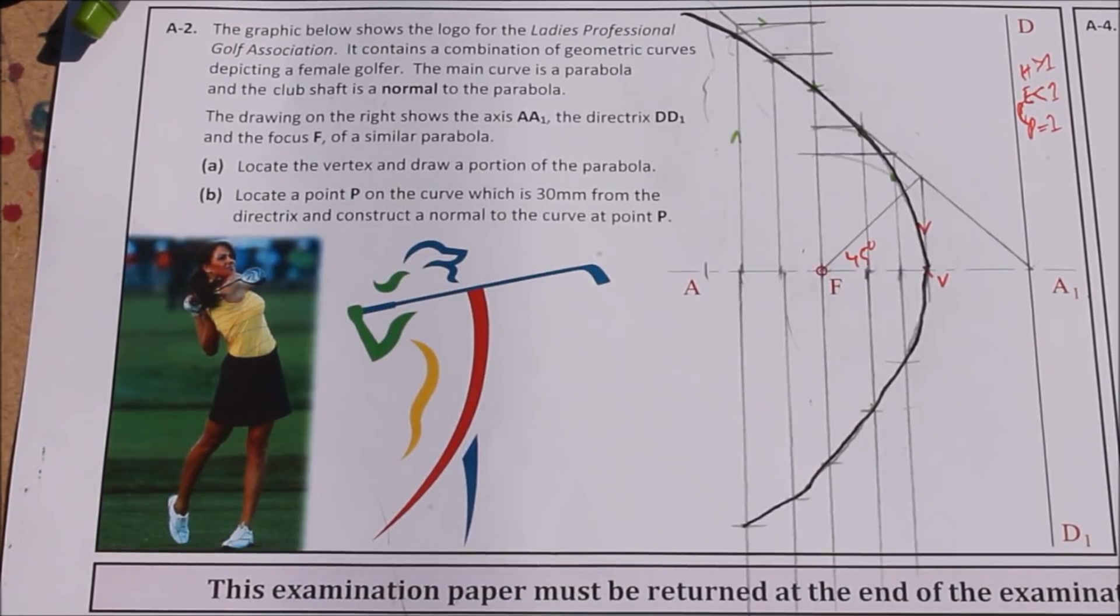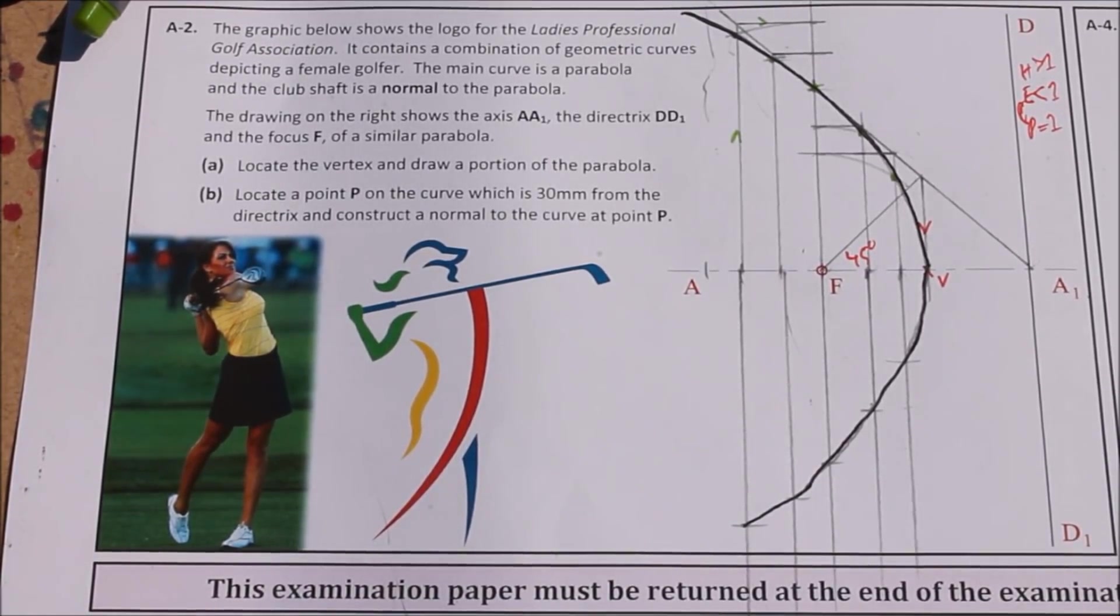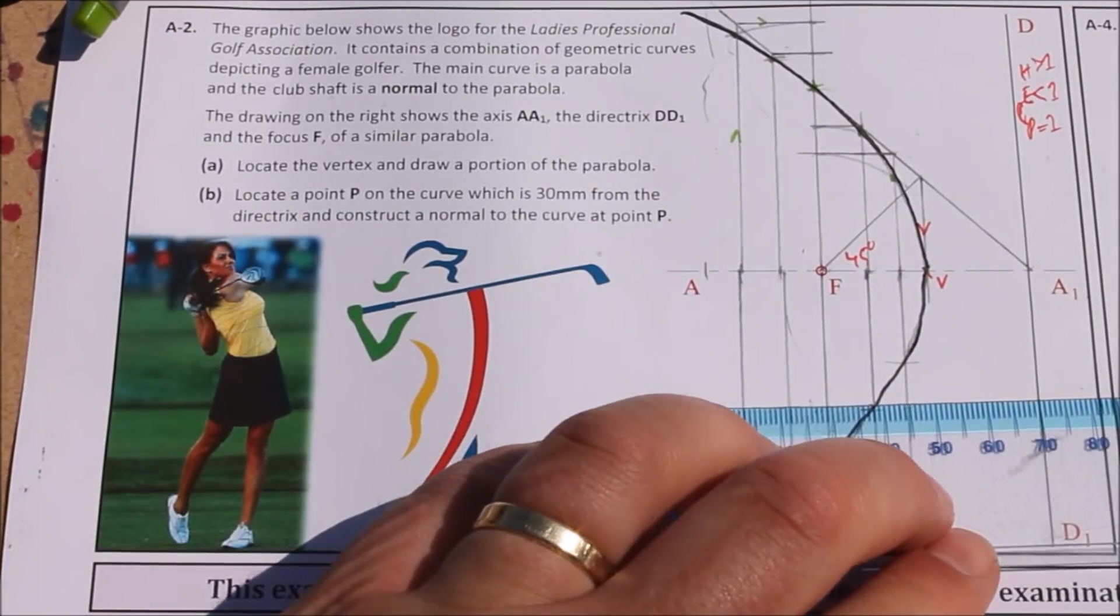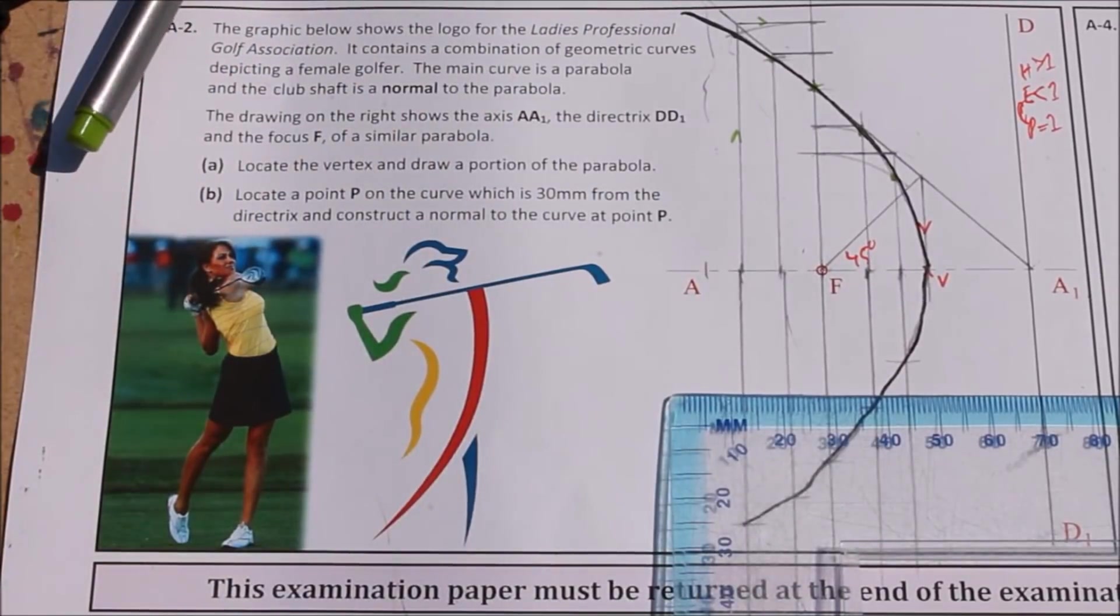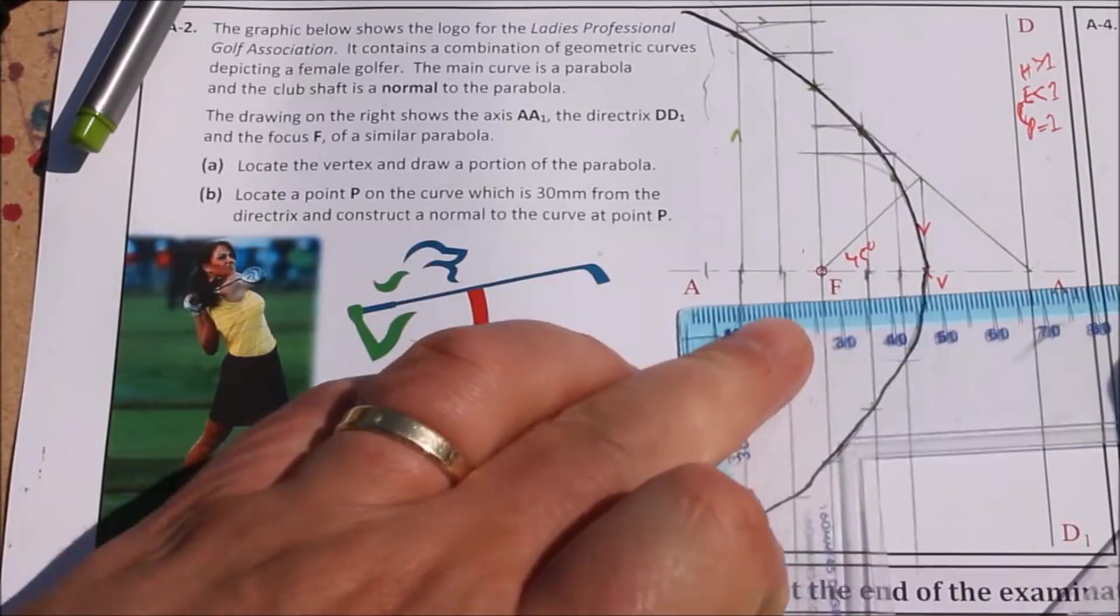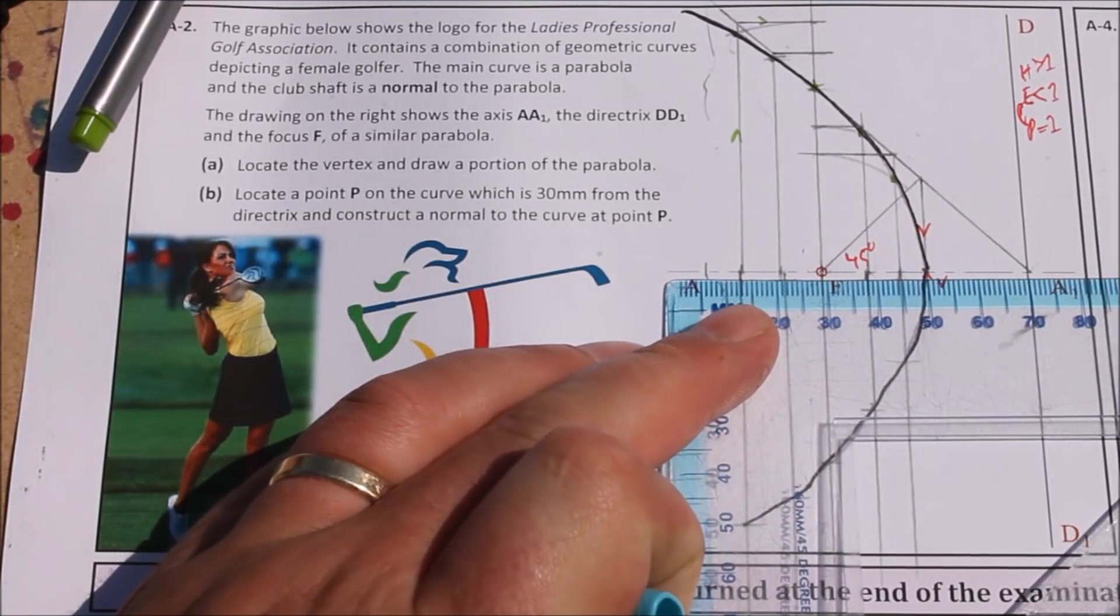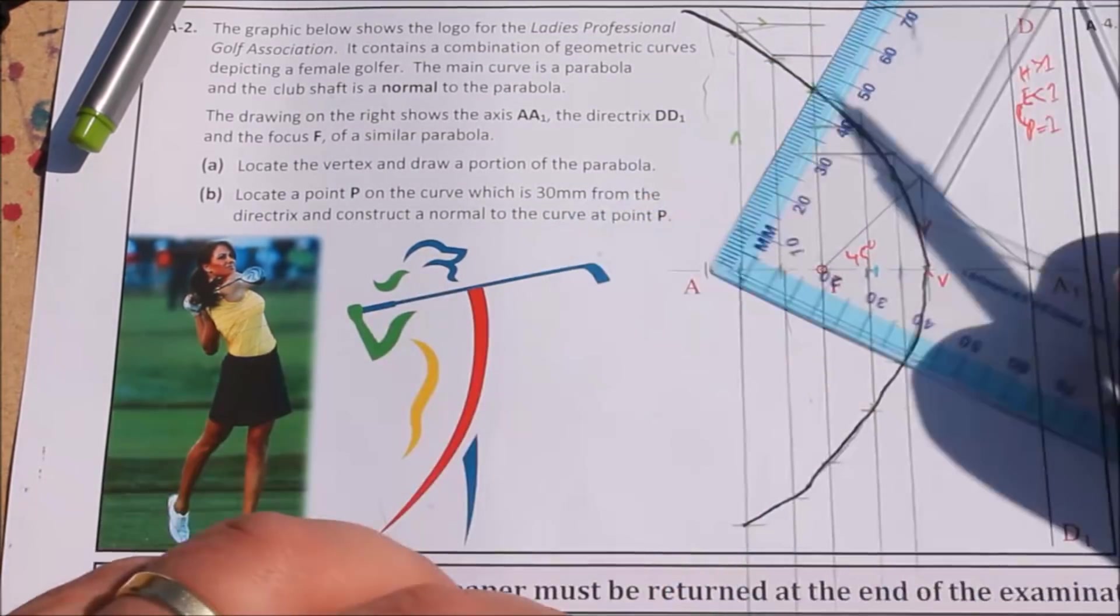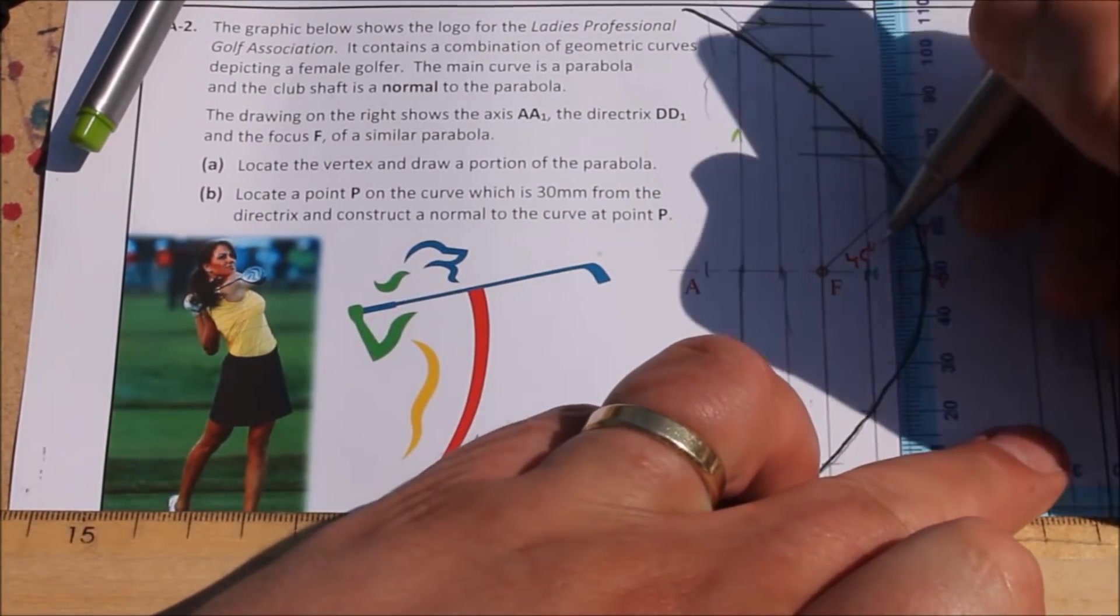Part B now is locate a point P on the curve which is 30mm from the directrix. So let's do that first. So from the directrix, we're going to measure in 30mm. So I'm going to draw that line up lightly where it cuts.